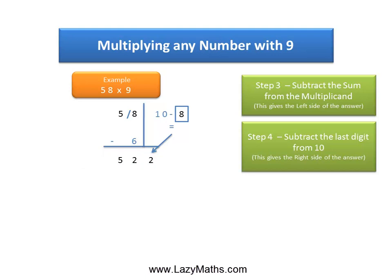Combining the left and right sides of the answer, we get the final answer as 522. So 58 times 9 equals 522.